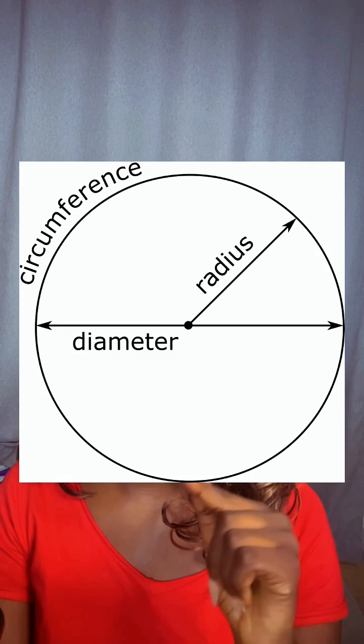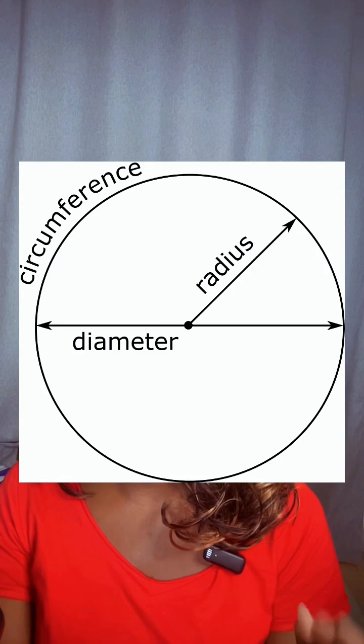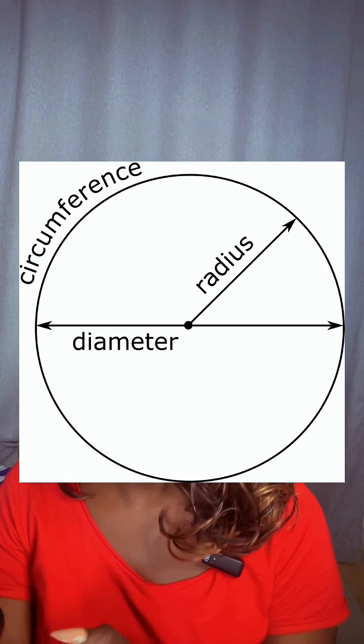Every point on the edge of a circle is the same distance from the center. That is not the same with an oval.